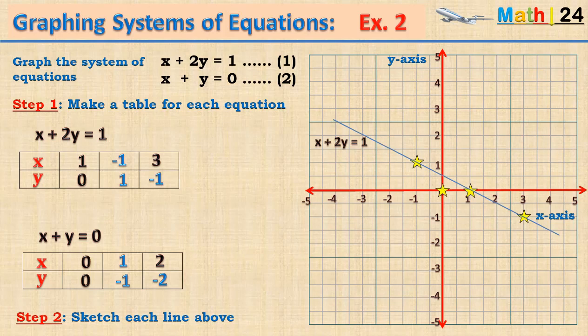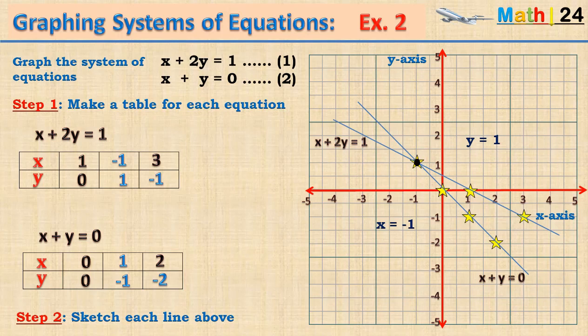For the second equation, we plot the points (0, 0), (1, −1), and (2, −2), and linking them gives us the equation x plus y equals zero. The point of intersection is where x equals minus one and y equals one, which are the solutions to this system.